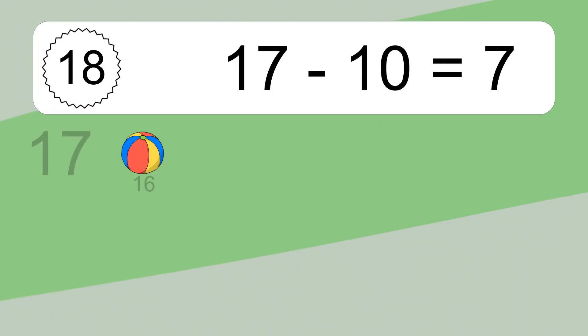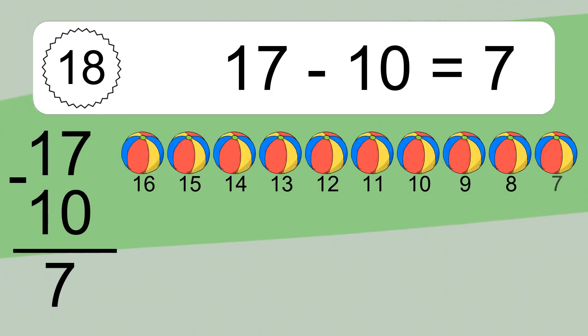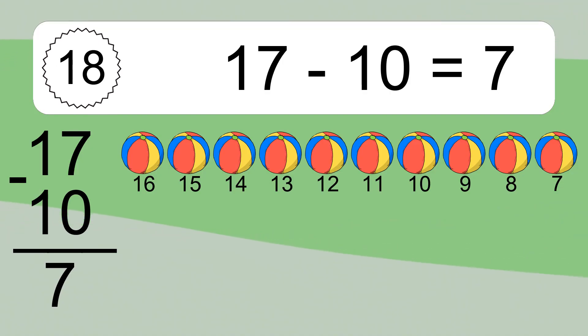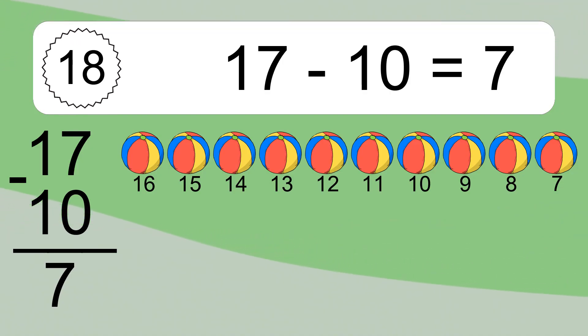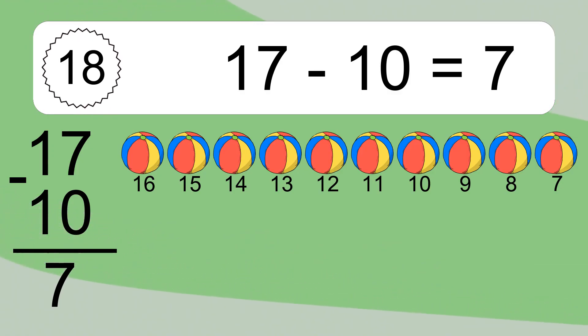17 minus 10 equals what? 17 minus 10 equals 7. Let's count it. 16, 15, 14, 13, 12, 11, 10, 9, 8, 7.